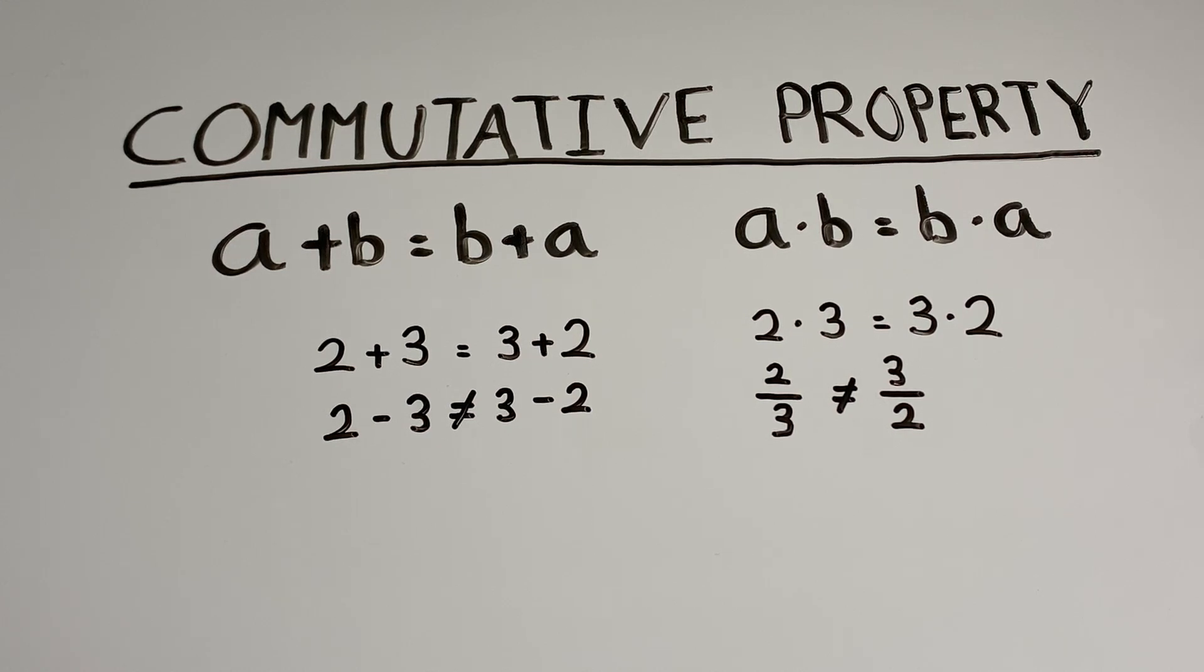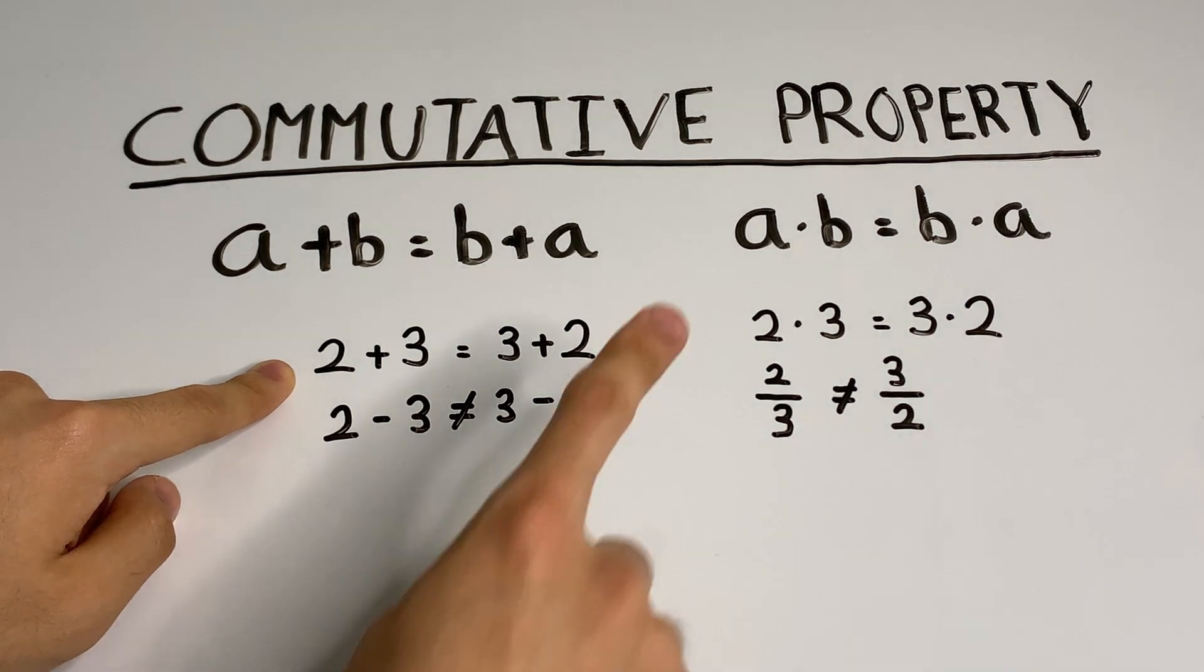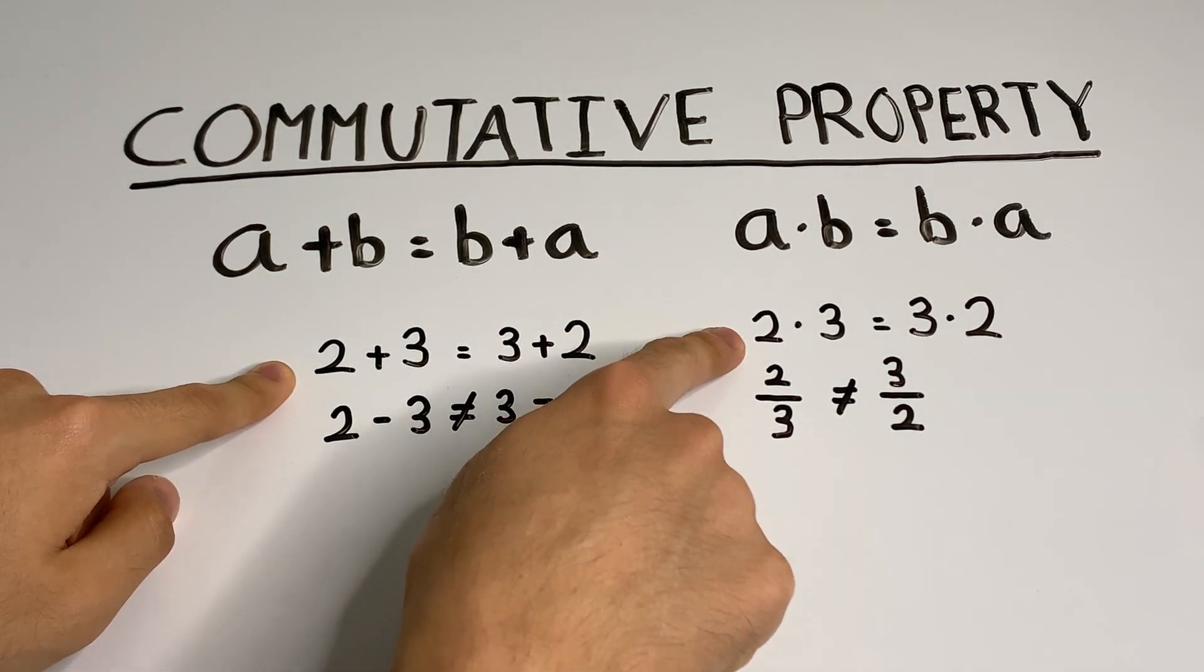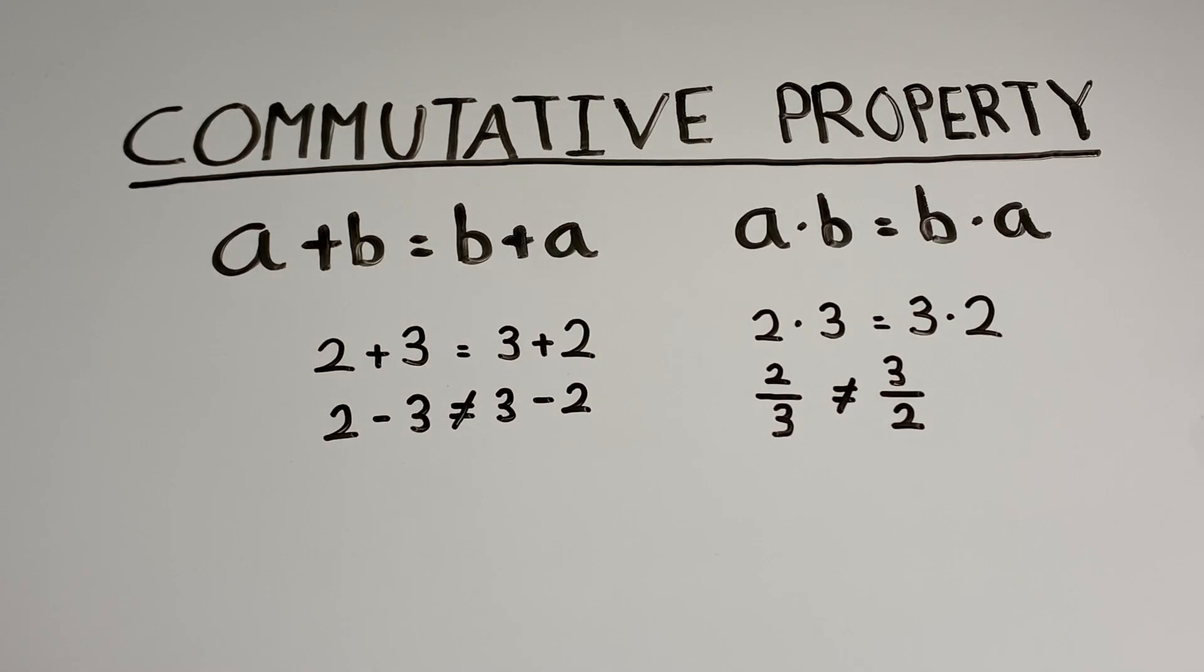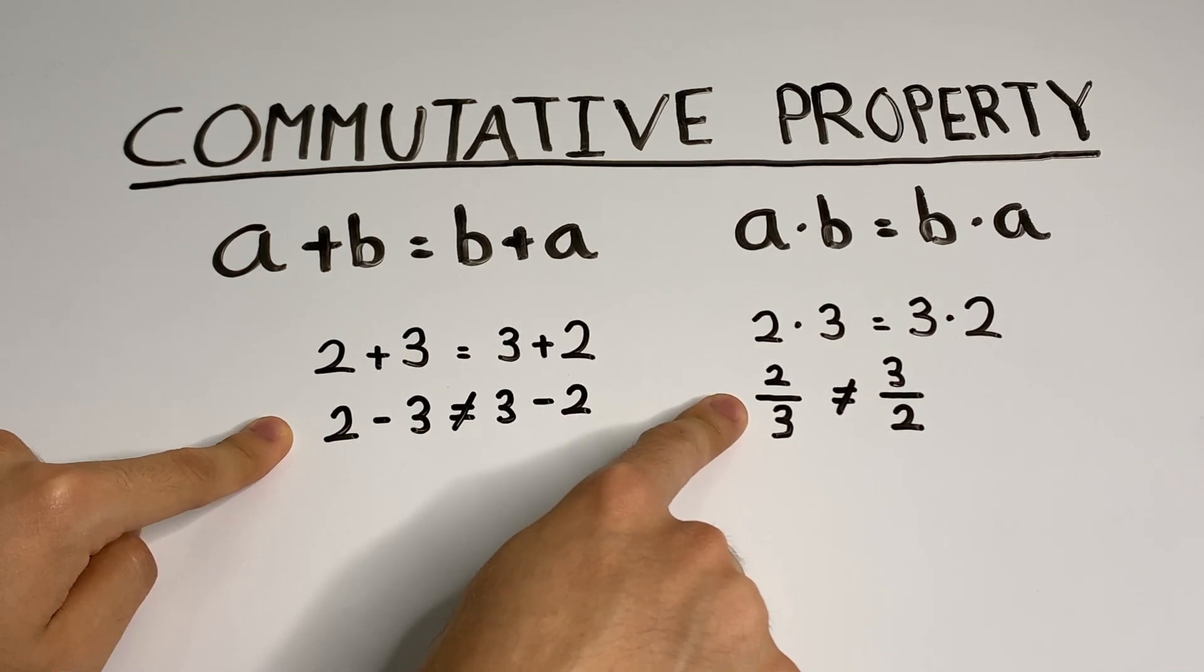What about subtraction and division? Well, the answer is no. We can see this with our numbers. With 2 and 3, we have 2 plus 3 equals 3 plus 2. We also have 2 times 3 equals 3 times 2, but we do not have 2 minus 3 equals 3 minus 2, and we do not have 2 over 3 equal to 3 over 2.